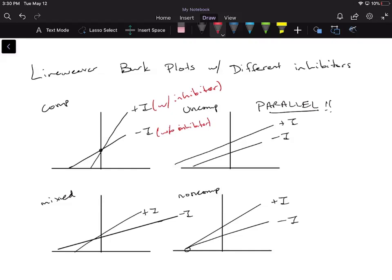So I want you guys to look at the two key areas that you're going to take from the Lineweaver-Burk plot: your X and Y intercepts, because those are going to tell us what's happening to our Km and our Vmax.